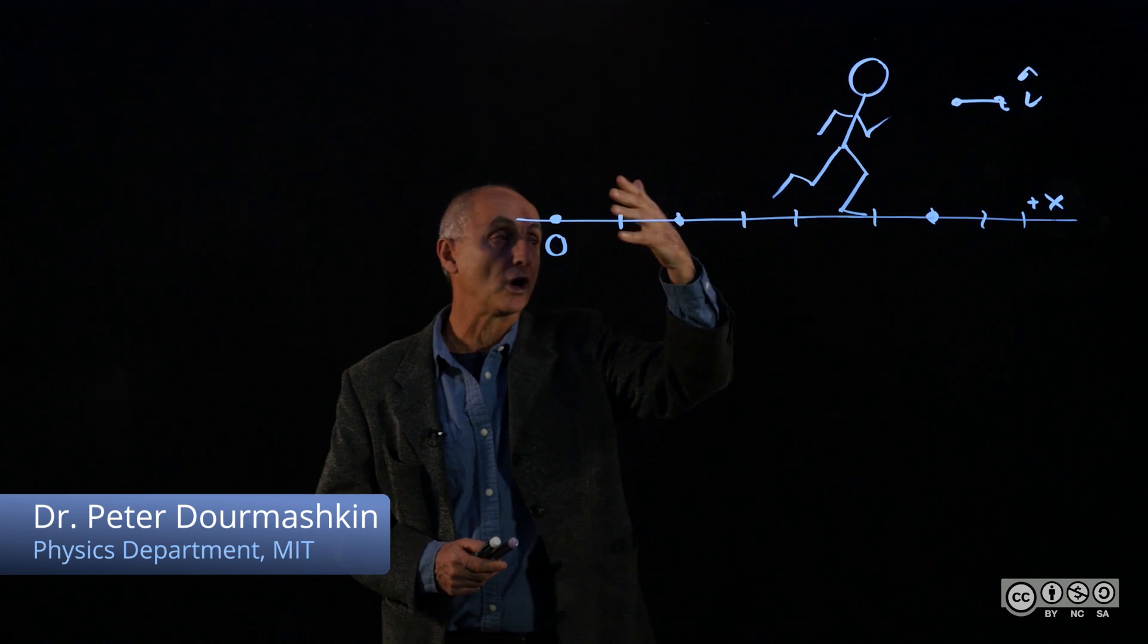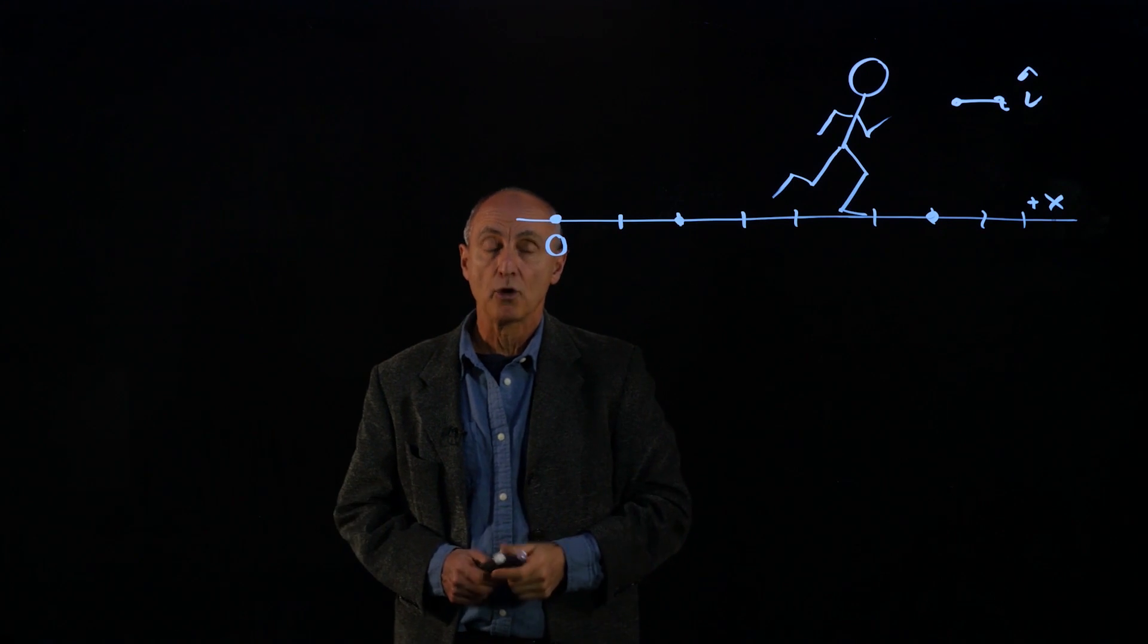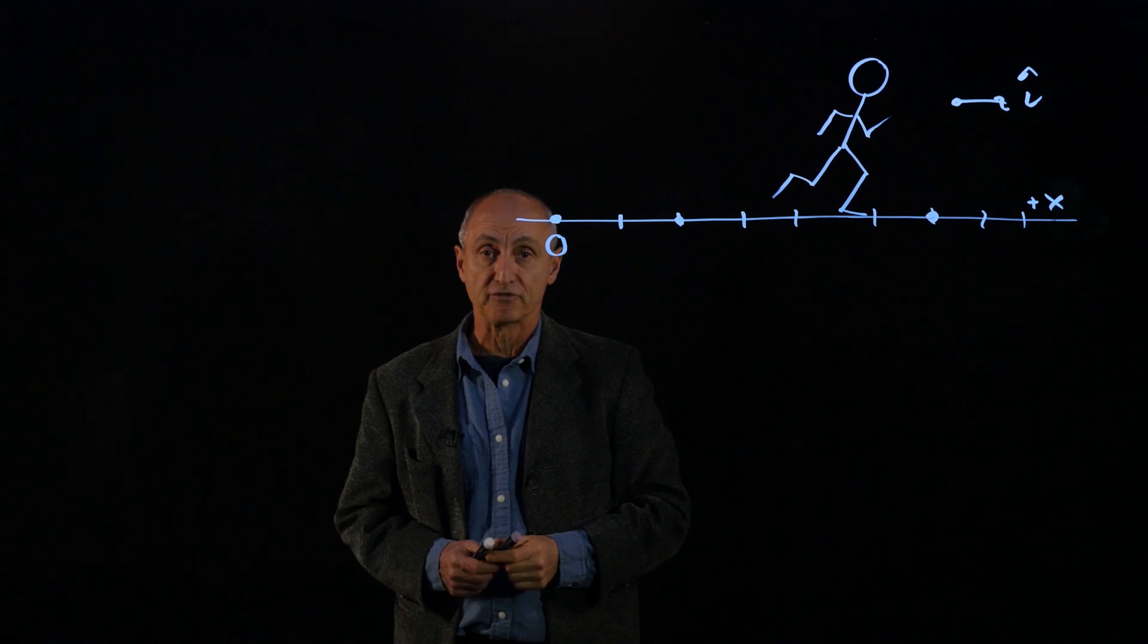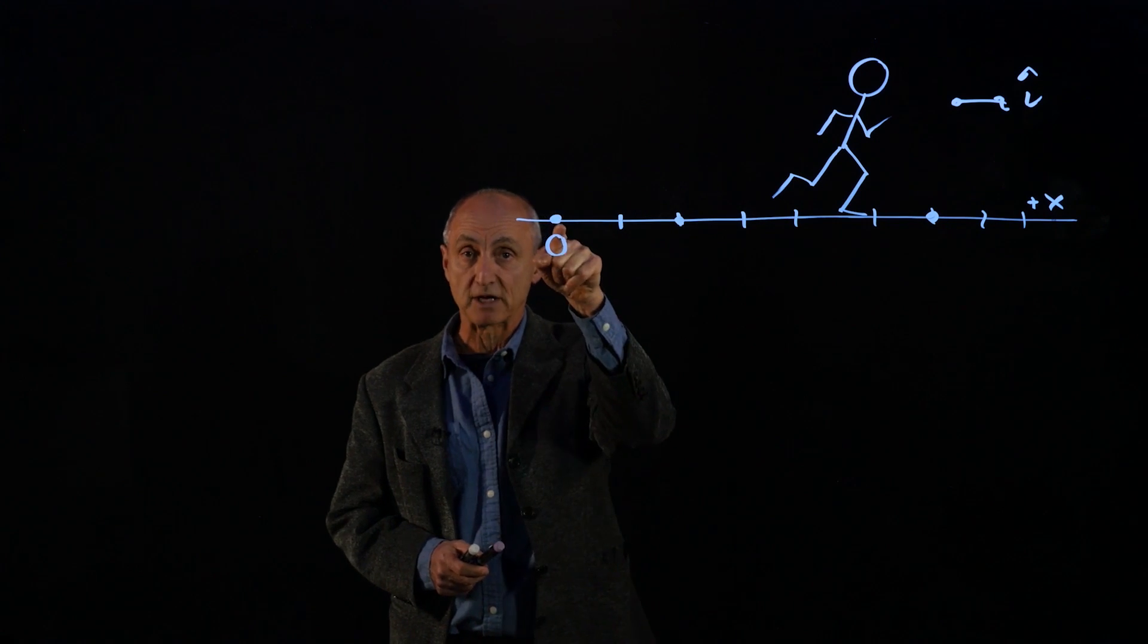Now that we've chosen a coordinate system for our runner going along a road, we now want to describe the position function of that coordinate system with respect to our choice of origin.